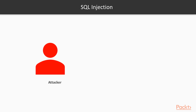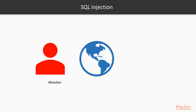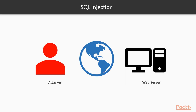The process is quite simple. First, the attacker uses the internet to send a malicious query to the web server of the target website. Second, the web server receives the query. Third, the web server fetches all available information and provides it directly to the attacker, who can then use that information for harmful purposes.